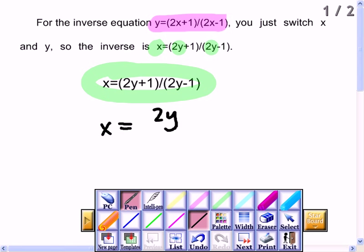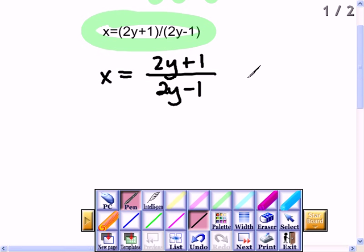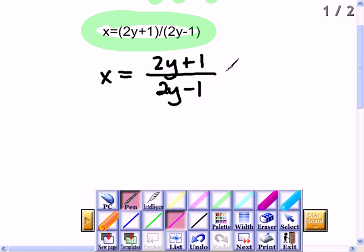So we really have 2y plus 1 over 2y minus 1. And if we're going to solve for y, first we have to get rid of the fraction. So I'm going to multiply both sides by 2y minus 1.